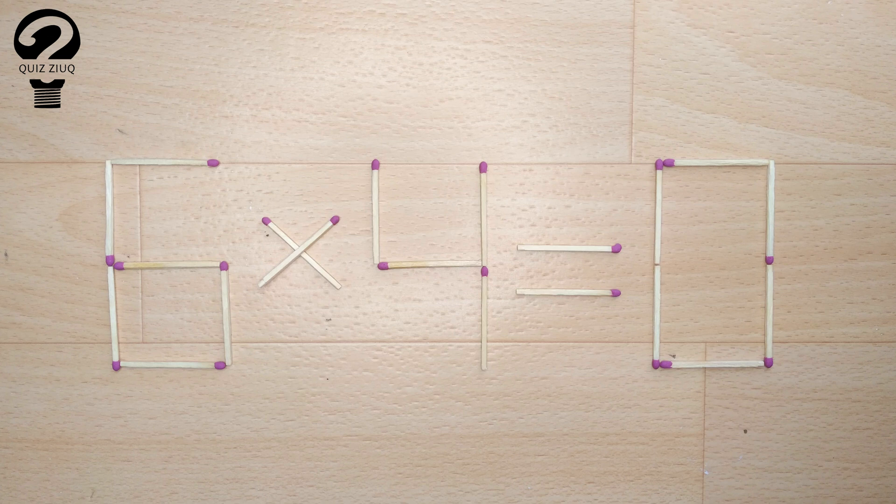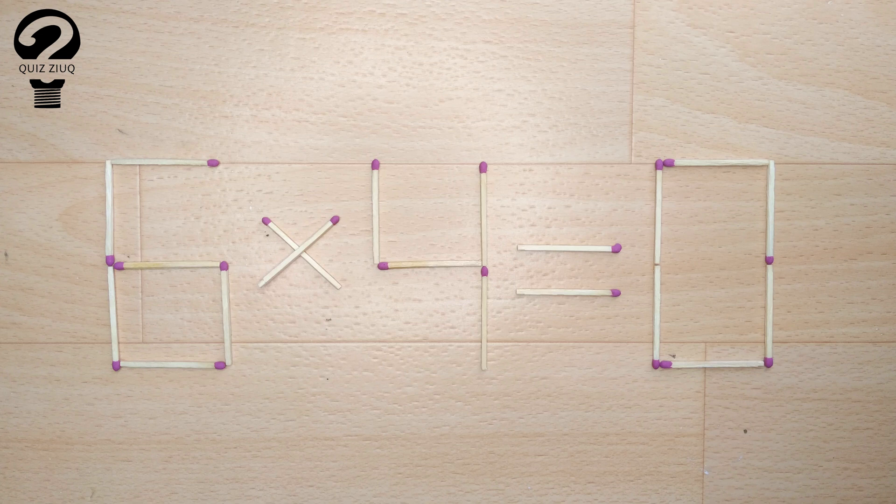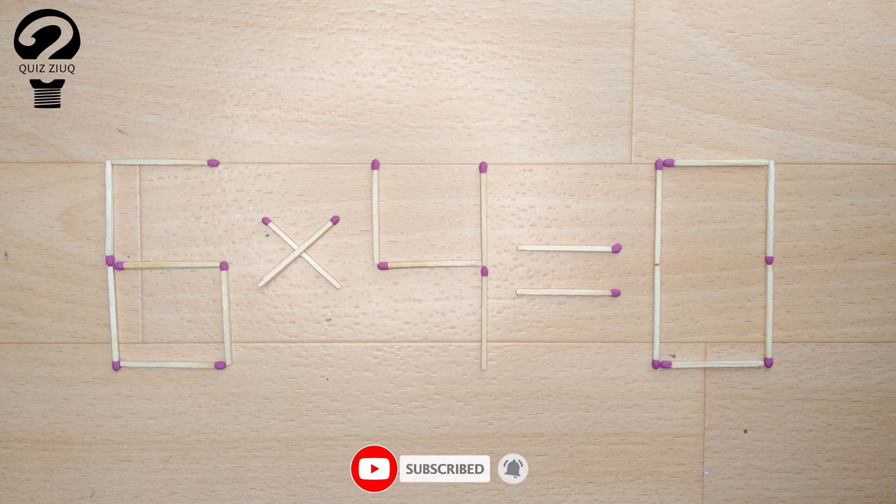This is a fairly simple mathematical problem that both children and adults can easily solve. Those who think logically can easily solve this problem. We need to move two matches to make our equation correct.